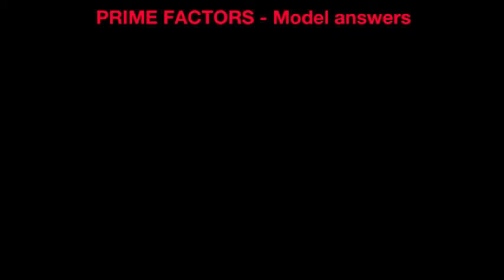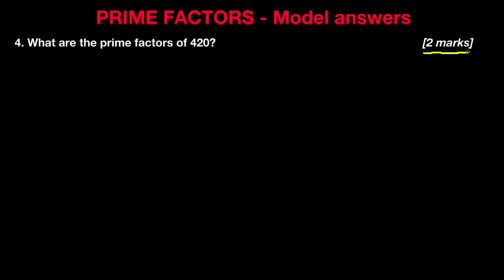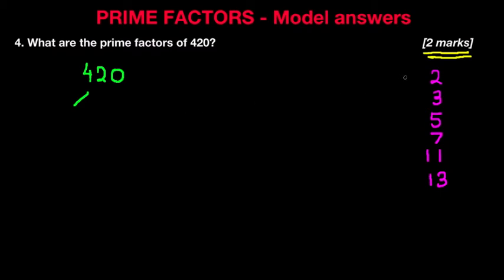Now let's have a look at our fourth question: what are the prime factors of 420? Typically this would be a 2-mark question. I'm going to begin by writing down the prime numbers: 2, 3, 5, 7, 11, and 13. Number 420 ends with a zero, so it's an even number — we know that can be divided by 2. 420 divided by 2 is 210. Now 210 is also an even number, so that can be divided by 2 as well. 210 divided by 2 is 105.